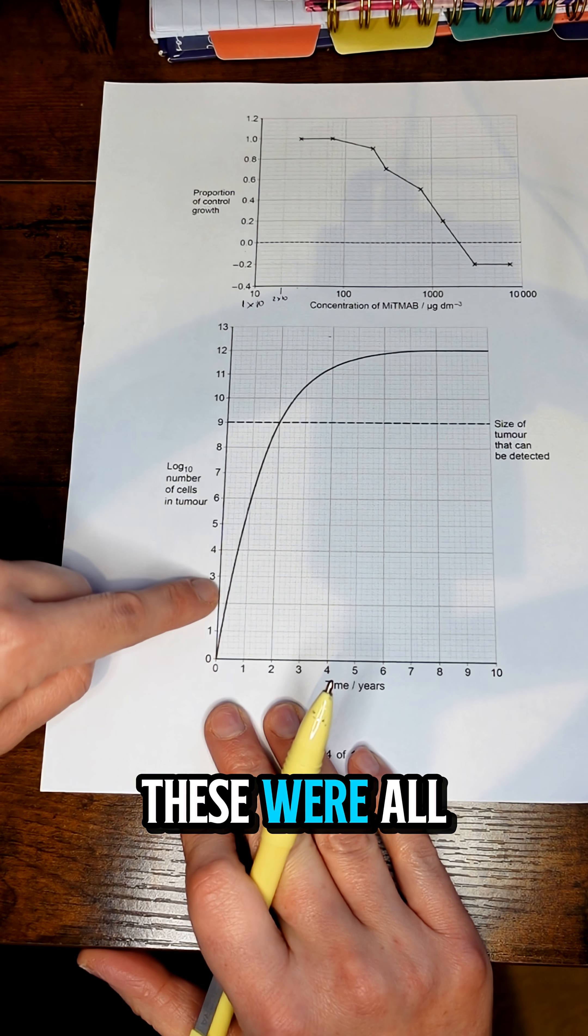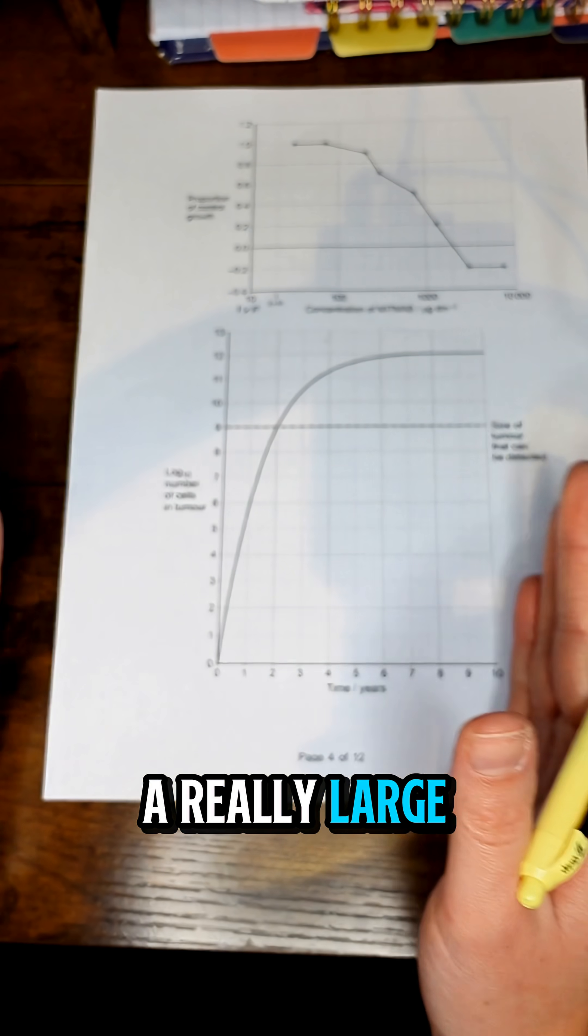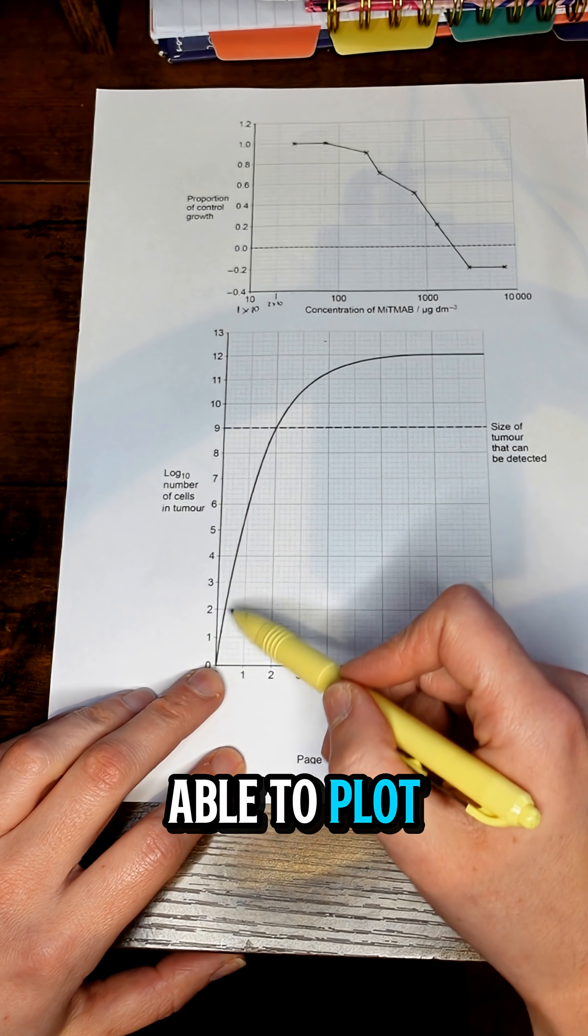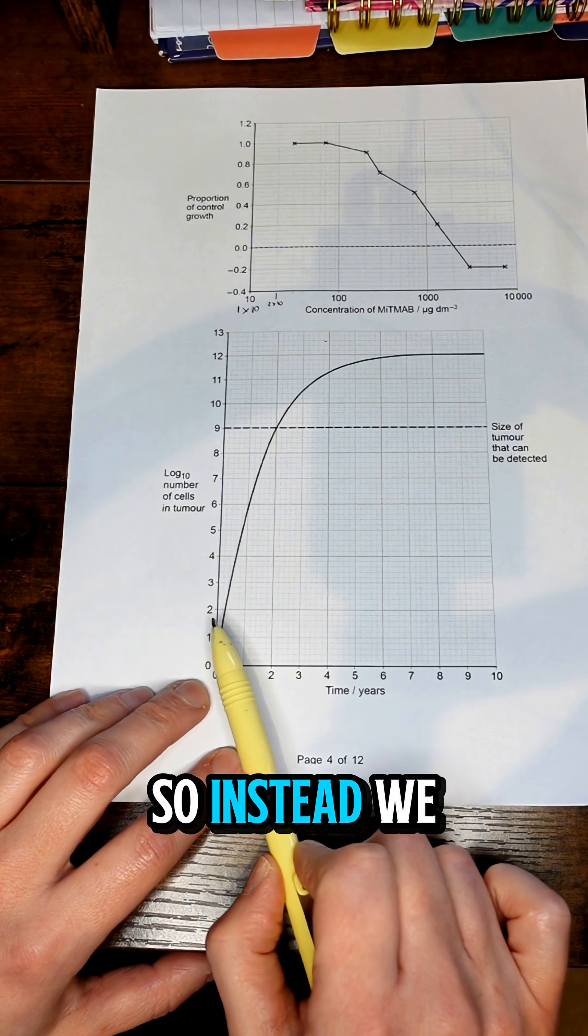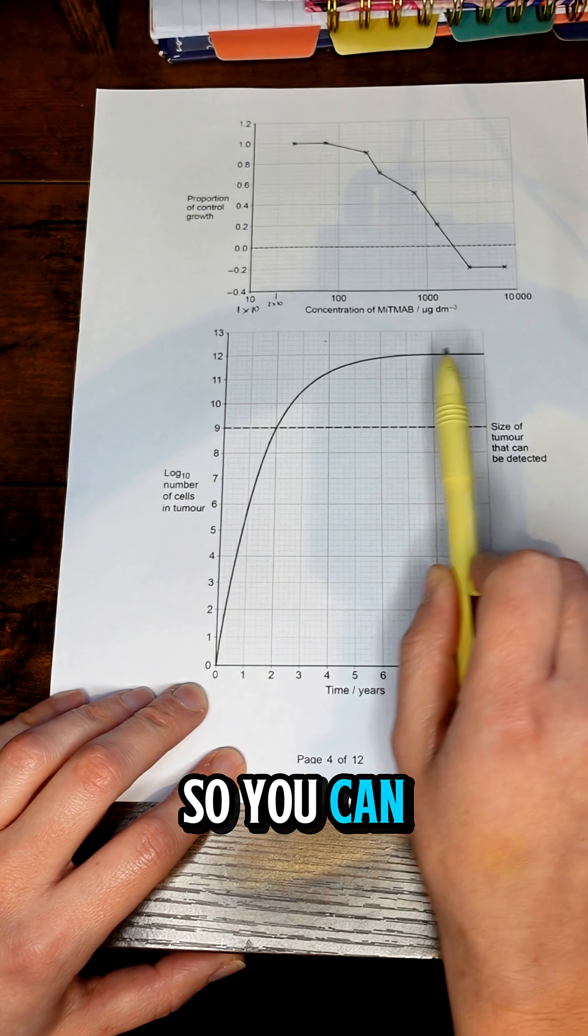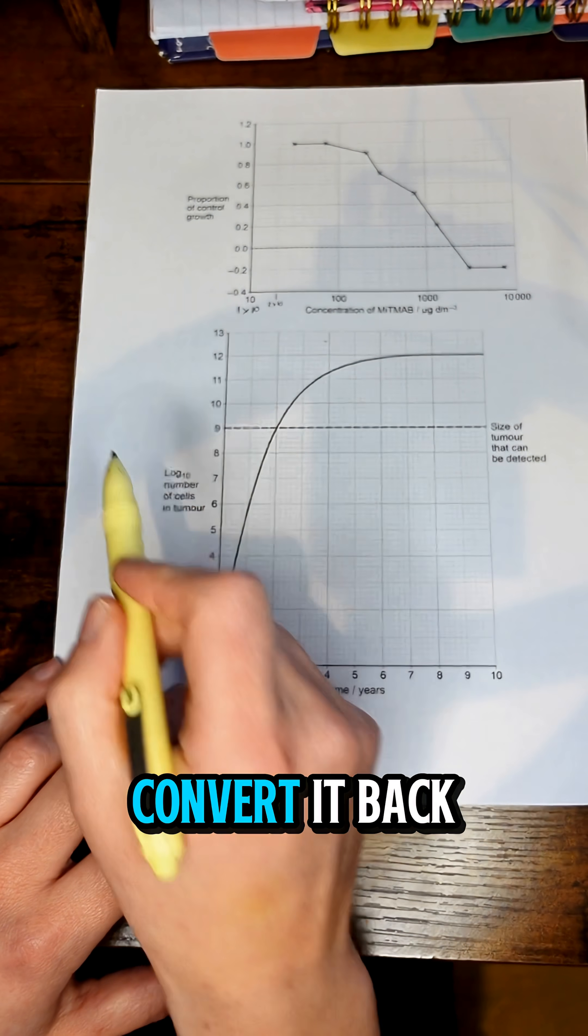The reason we do that is if you have a really large range of numbers, you wouldn't be able to plot them going from, let's say, down from zero up to millions on a scale. So instead we convert it to a log value so you can plot it. But what that means is if you then have to read off a value, you have to convert it back to the raw.